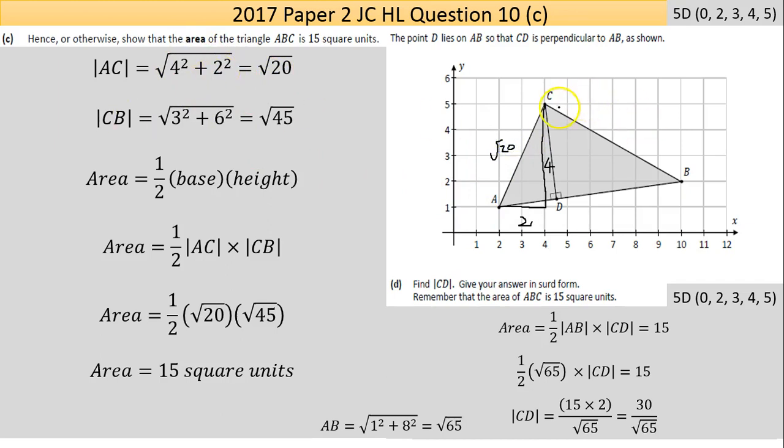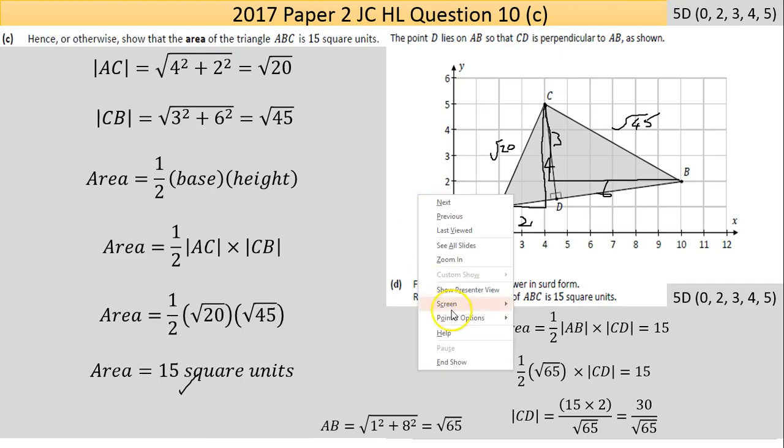I've done the same with CB, which is 6 units along and 3 units up, so 3 squared plus 6 squared equals square root of 45. Now I have the length of those two sides. It's just one-half base by height: one-half times square root of 20 times square root of 45. Put it in a calculator - I got 15 square units, happy days.